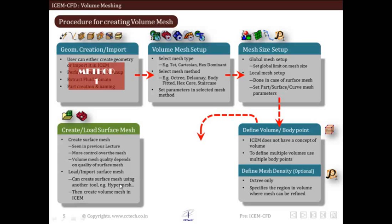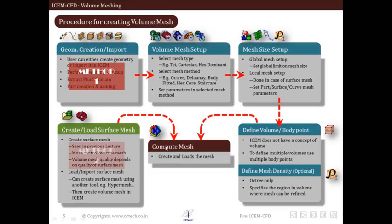A surface mesh created in some other software can also be imported to control the final volume mesh. This surface mesh is used in Method 2 and leads to the final computed mesh. In Method 2 we are directly using or creating a surface mesh to create the final volume mesh, whereas in Method 1 we start from geometry cleanup and volume meshing parameters to arrive at the final volume mesh.